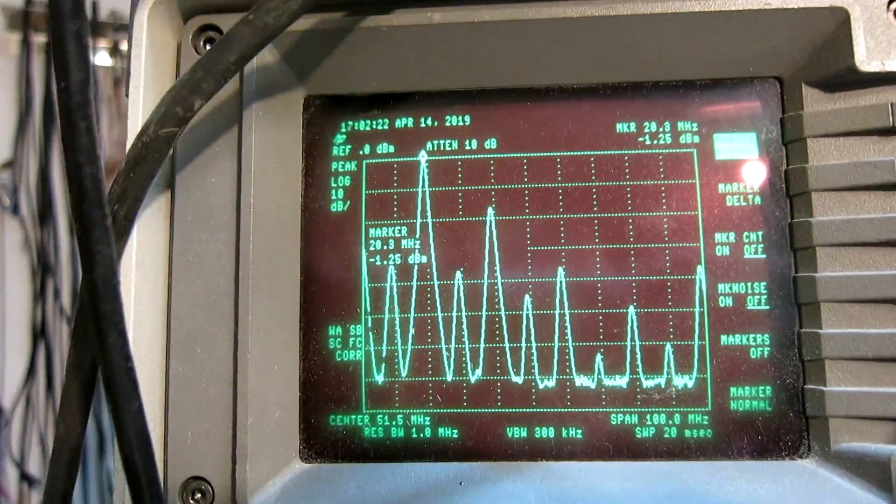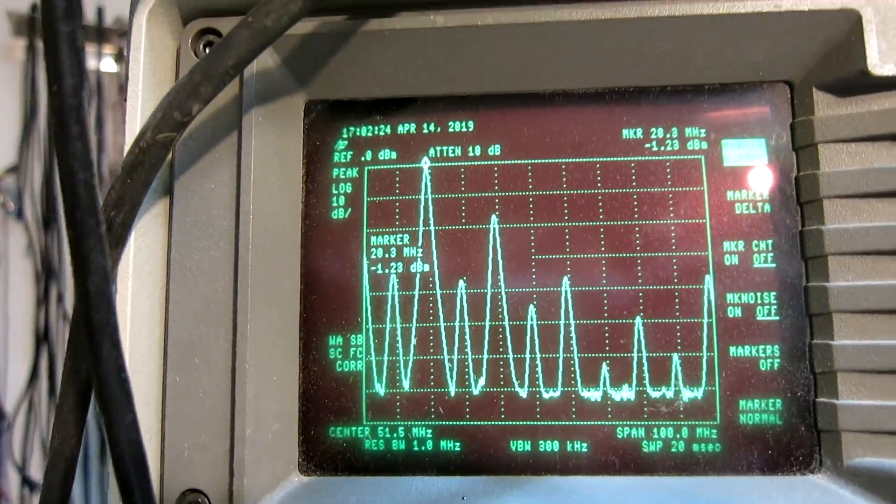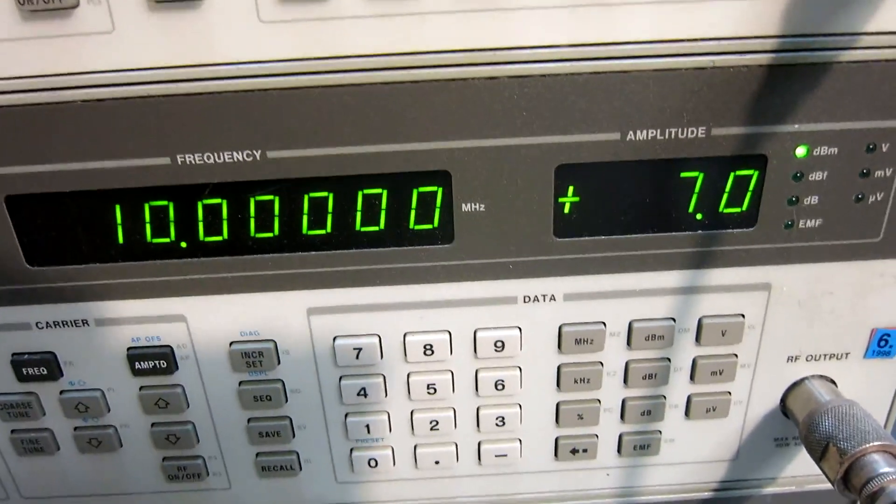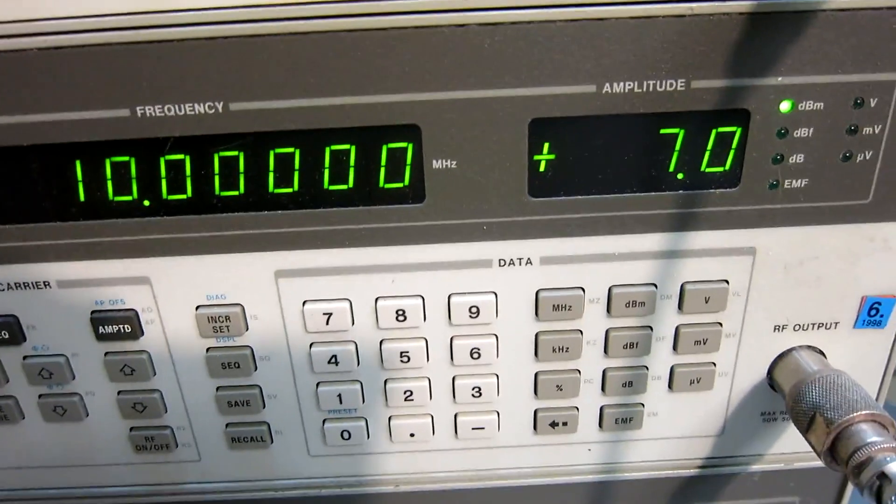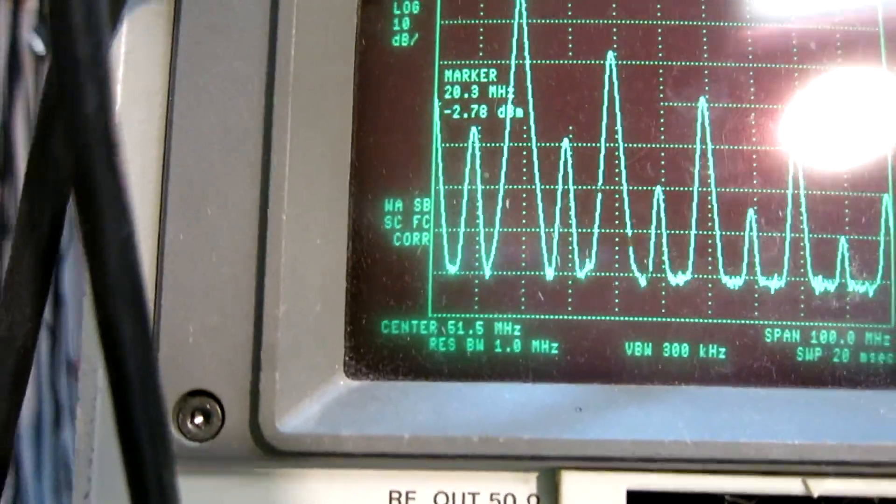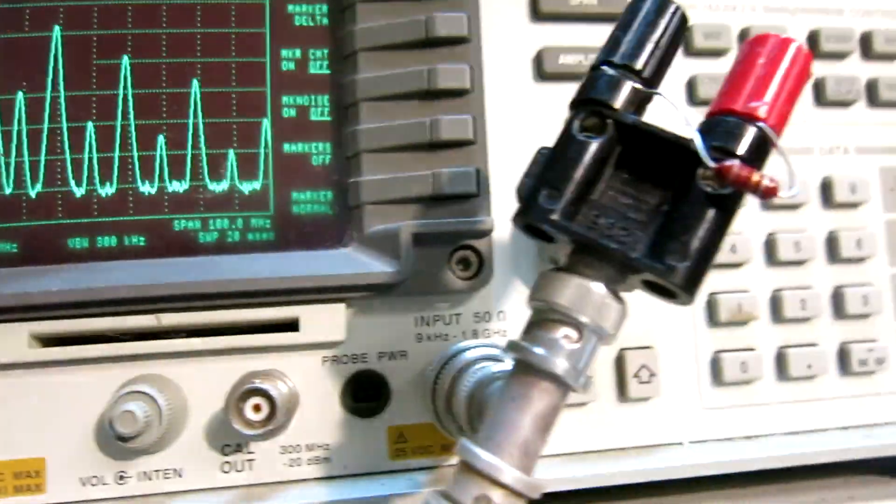But before that, I will change the power splitter. And I do the measurements on 20 MHz at a signal level of plus 7 dBm, where the level is minus 2.75 in this configuration.